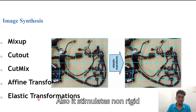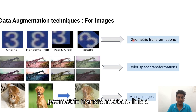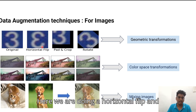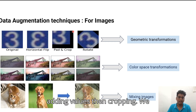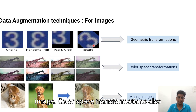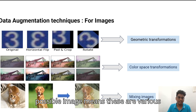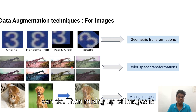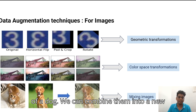Here is an example of geometric transformation — the original image is a three-digit image. We perform a horizontal flip, padding, and cropping. Padding means adding values, then we crop the image, and then rotate the image. Color space transformations are also possible — these are various types of color space transformations we can do. For mixup of images, here is an image of a cat and an image of a dog that we can combine into a new image.